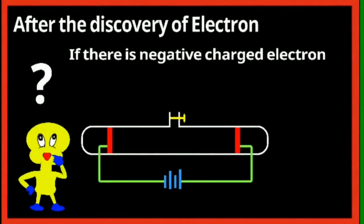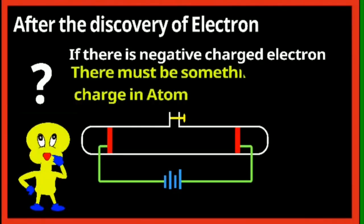According to the next topic, discovery of protons: an atom is electrically neutral. Therefore, if the atom contains negatively charged particles, that is electrons, it must contain positively charged particles as well. This led to the discovery of protons by the German scientist Goldstein.